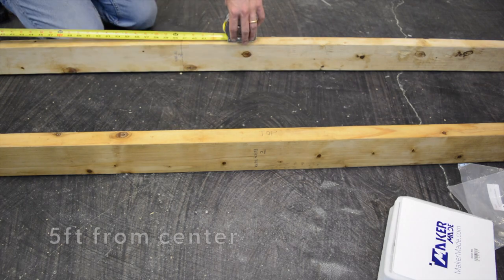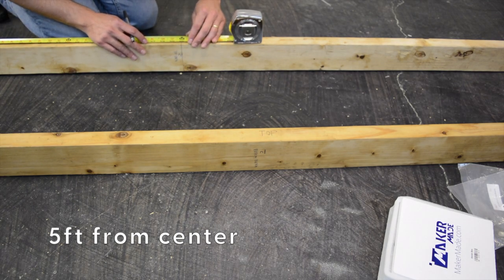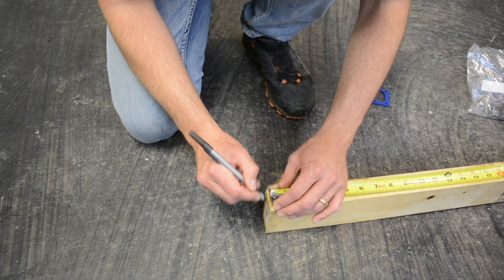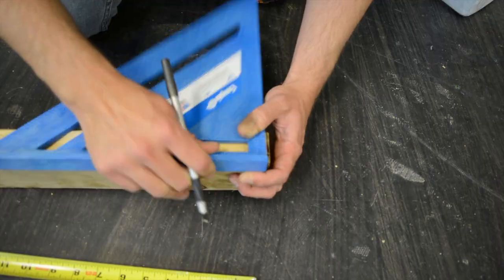And then we're going to measure out 5 feet from center on each side. So we're going to go 5 feet out on the right and then 5 feet out on the left. And then we're going to mark that and draw another straight line with the speed square, exactly 5 feet out on each end.